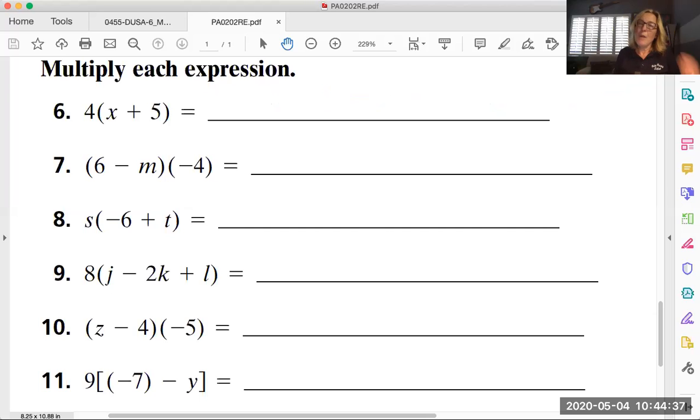The distributive property says that when you have a group, like in this case the group is x plus five and we're going to repeat it four times, it means that we're going to multiply everything in the group by the number of times that we want and we want it four times. So four times x is 4x, four times five is 20. That's a lot simpler than thinking about it as repeated addition but rather as multiplication.